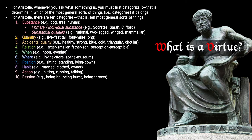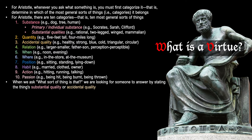Examples of substance are dog, tree, and human. Primary or individual substances are Socrates, Sarah, and Clifford. Substantial qualities are rational, two-legged, winged, and mammalian. Quantity examples are five feet tall and four miles long. Accidental quality examples are healthy, strong, blue, cold, triangular, and circular. Relation examples are larger, smaller, father, son, perception, and perceptible — anything defined only in relation to something else.